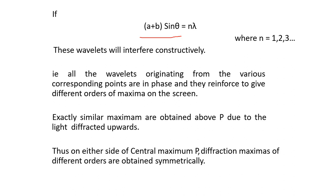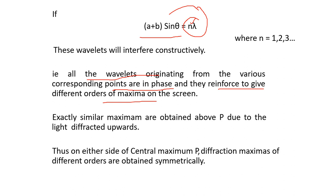If this path difference (a+b)sin θ equals Nλ, where N = 1, 2, 3, etc., the secondary wavelets will undergo constructive interference, because path difference equal to Nλ is the condition for constructive interference. All the wavelets originating from various corresponding points will be in phase and reinforce to give different orders of maxima on the screen. For N = 1, you get the first order maxima; for N = 2, the second order; for N = 3, the third order; and for N = 0, you get the central maxima at P.